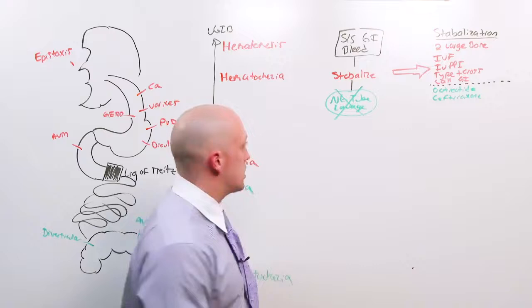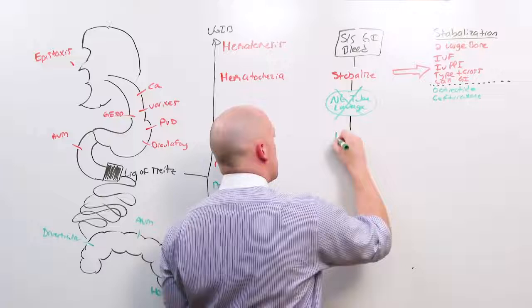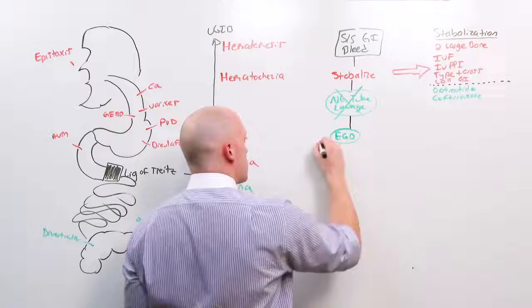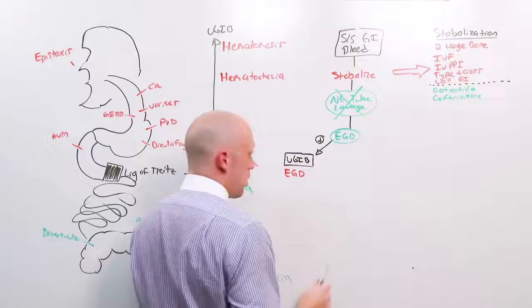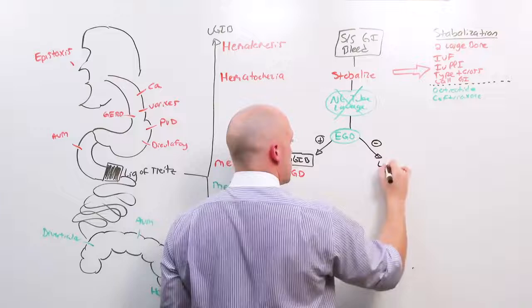Instead, regardless of what the NG tube lavage shows, you go to an EGD. And if you find the bleeding source on endoscopy, it was an upper GI bleed, and you can take interventions with the endoscopy. I'll talk about what those are when we talk about the individual diseases. If it's negative, then you presume this is a lower GI bleed. And then you have to decide what to do next.